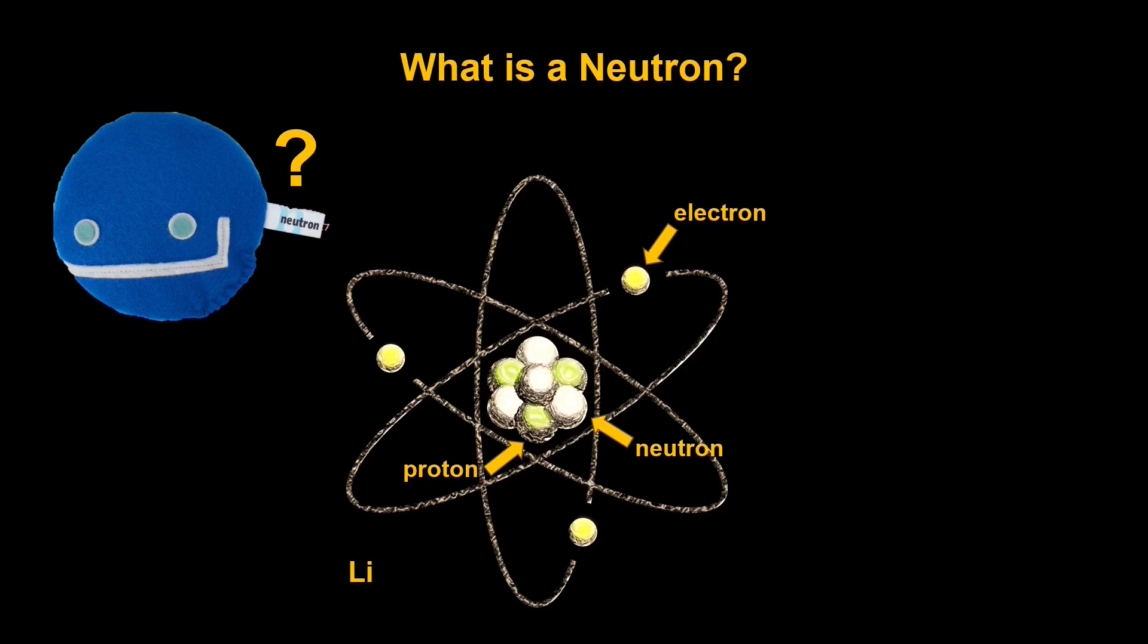A neutron falls into the category of subatomic particles because it's one of the things that atoms are made out of. Now, the weight of a neutron is about 1.675 times 10 to the negative 27 kilograms. And also, it has no charge. Now that we know what a neutron is and where to find them in nature, how do we generate the neutrons that we would utilize for neutron imaging?